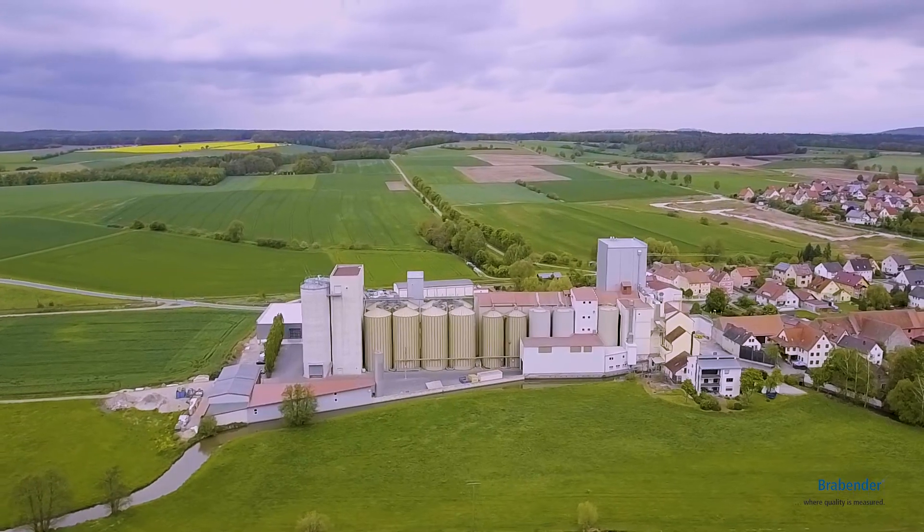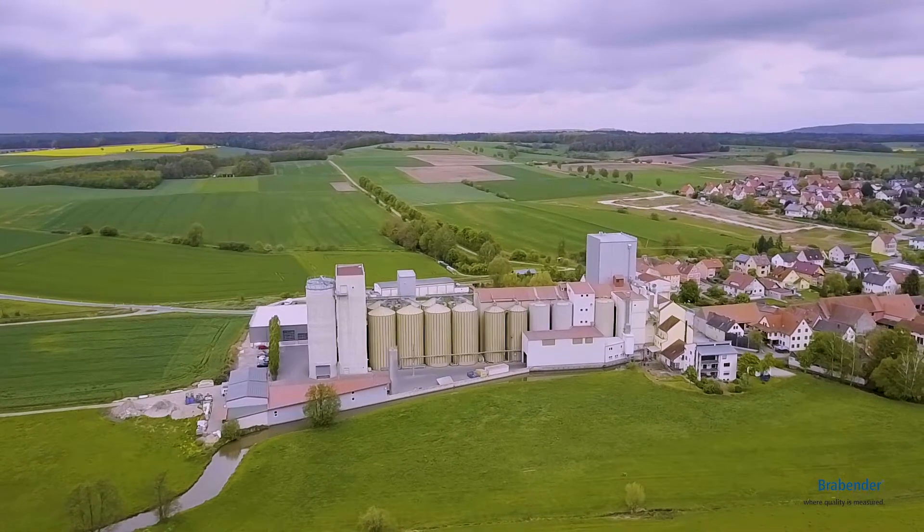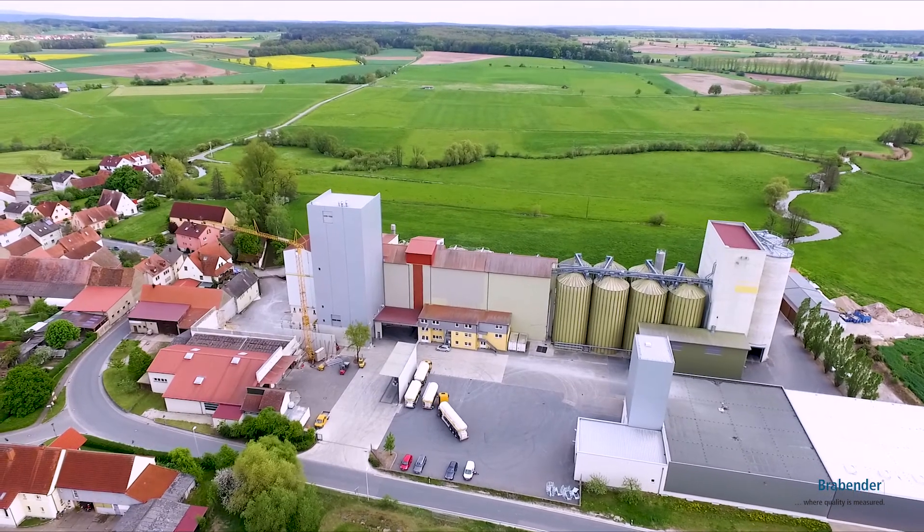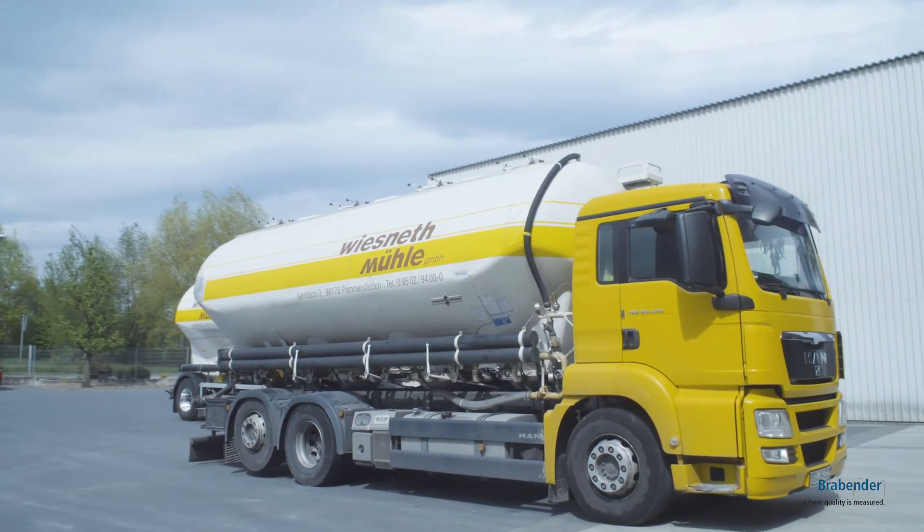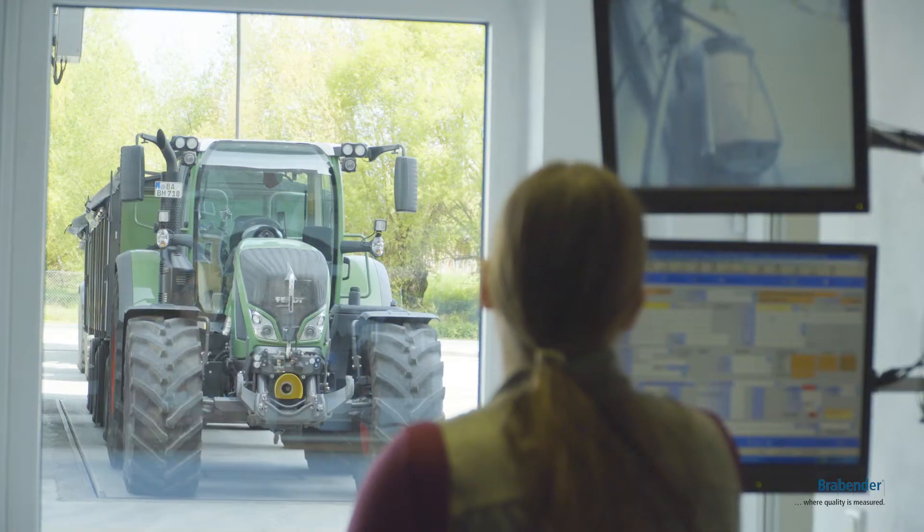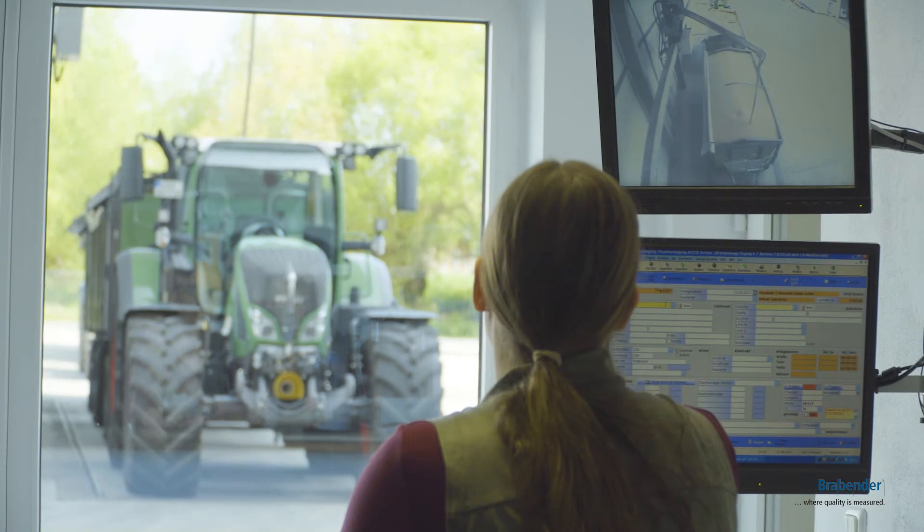Wiesnet Mill, located in Pommersfelden in South Germany, also trusts in Brabender products. Following the creed, control leads to safety, the mill counts among Bavaria's larger mills. The grain is delivered directly from agricultural centers to Bamberg, Nuremberg and Würzburg.